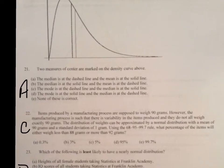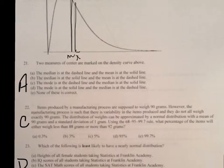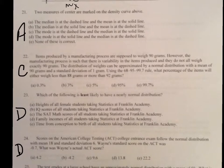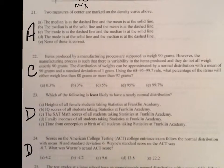On number 21, basically, two measures of center are marked. Well, because it's skewed to the right, this one is going to be your median. That means this is going to be your average, and the answer choice is A. On number 22, it says what percentage of the items will weigh less than 88 grams. So, if you're looking at your empirical rule and you draw your graph, you're going to see that C is your answer.